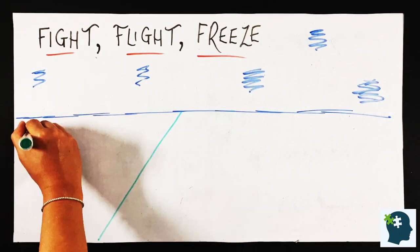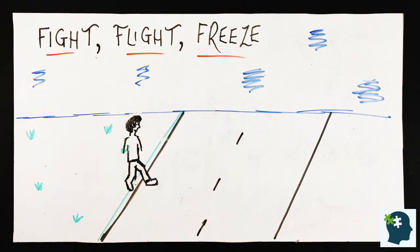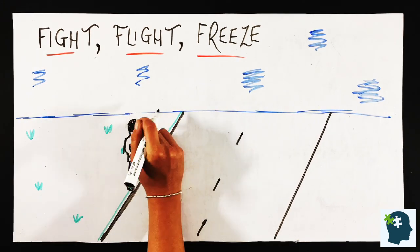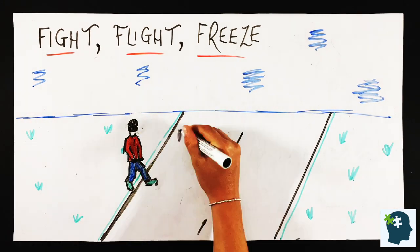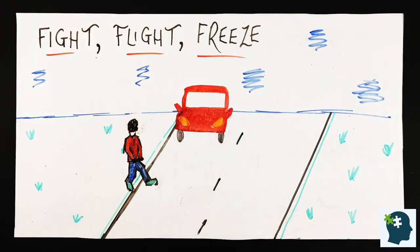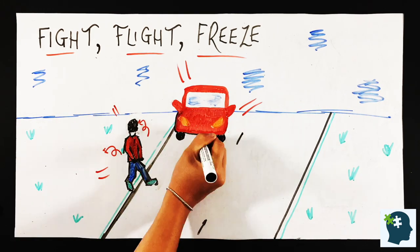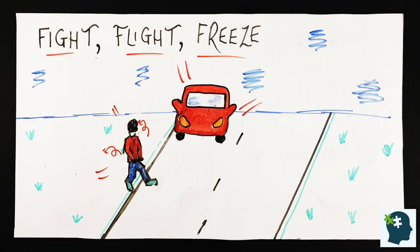Our chimp still plays an important role in our survival today. Say we step out into the road, and a car suddenly speeds out of a junction next to us. It's our chimp, with our fight, flight, or freeze response, that kicks in, making us jump back to the curb, without our human conscious brain analyzing the situation, instantly and instinctively, in just a fraction of a second.